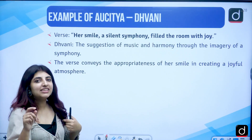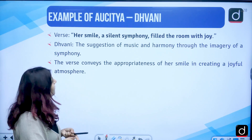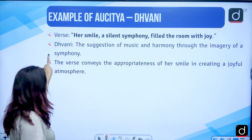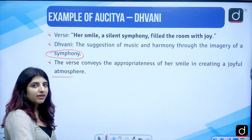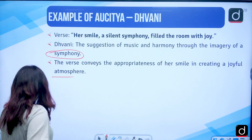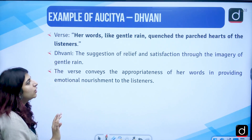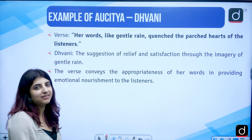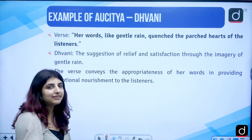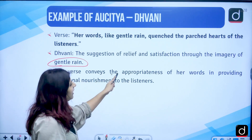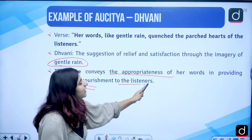Then we have Dhvani — the suggestion, the suggestive meaning. Example: 'Her smile, a silent symphony, filled the room with joy.' The suggestion of music and harmony through the imagery of a symphony conveys that her smile is creating a joyful atmosphere. Another example of Dhvani: 'Her words, like gentle rain, quenched the parched hearts of the listeners.' The suggestion of relief and satisfaction through the imagery of gentle rain conveys the appropriateness of her chosen words in providing emotional nourishment.